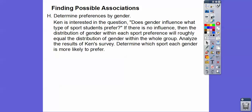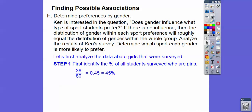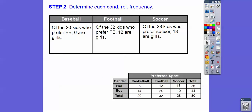We're going to see if there are any discrepancies and determine which sport each gender is more likely to prefer. First, let's analyze the data about girls that were surveyed. We need to find the percent of all students surveyed who were girls. There were 36 girls and 80 total, so 45% of the people surveyed were girls.